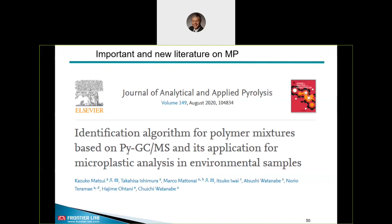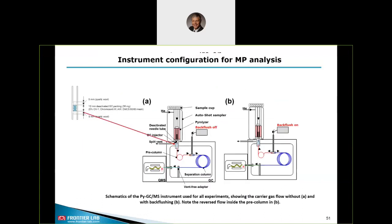This refers to a very recent publication in collaboration with Marco Mattonai from the University of Pisa, titled 'Identification algorithm for polymer mixtures based on PyGCMS and its application for microplastic analysis in environmental samples.' For microplastic analysis we use a special system setup: to prevent peak shape distortion and to prove reproducibility, the glass liner in the injector was packed with quartz wool and deactivated packing material with GC stationary phase. A backflush system was also used to reduce the analysis time when dealing with high-boiling-point pyrolysis products such as long-chain hydrocarbons from pyrolysis of polyethylene and polypropylene.